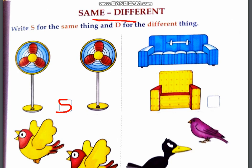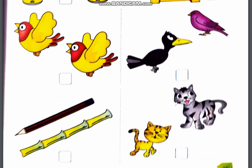Sofa, color, design, everything looks different, so here you will write different, D. Next, these birds, are they same or different? They are same, then we will write here S.